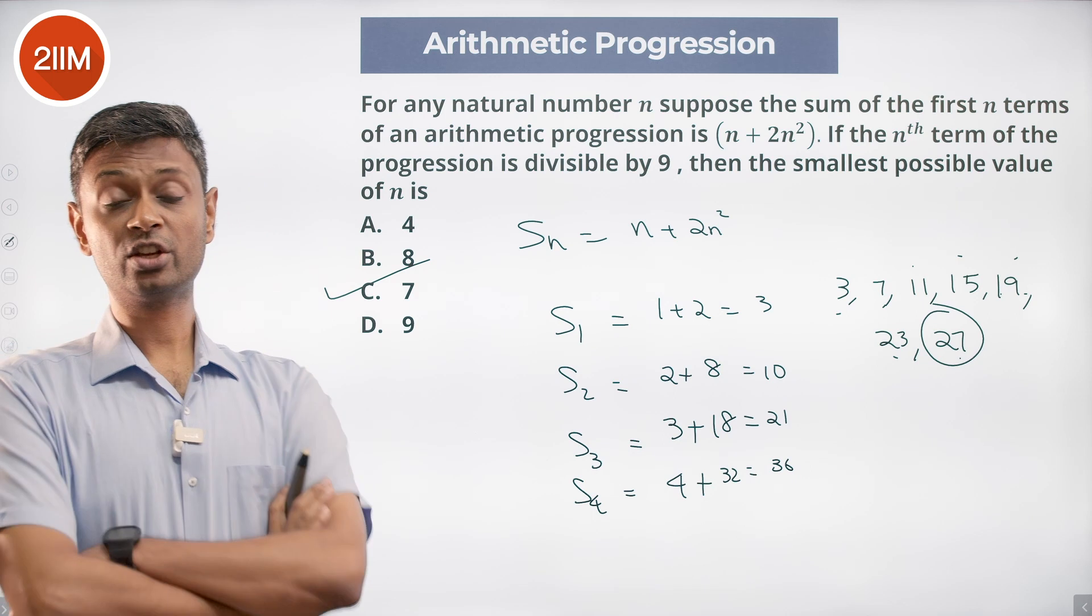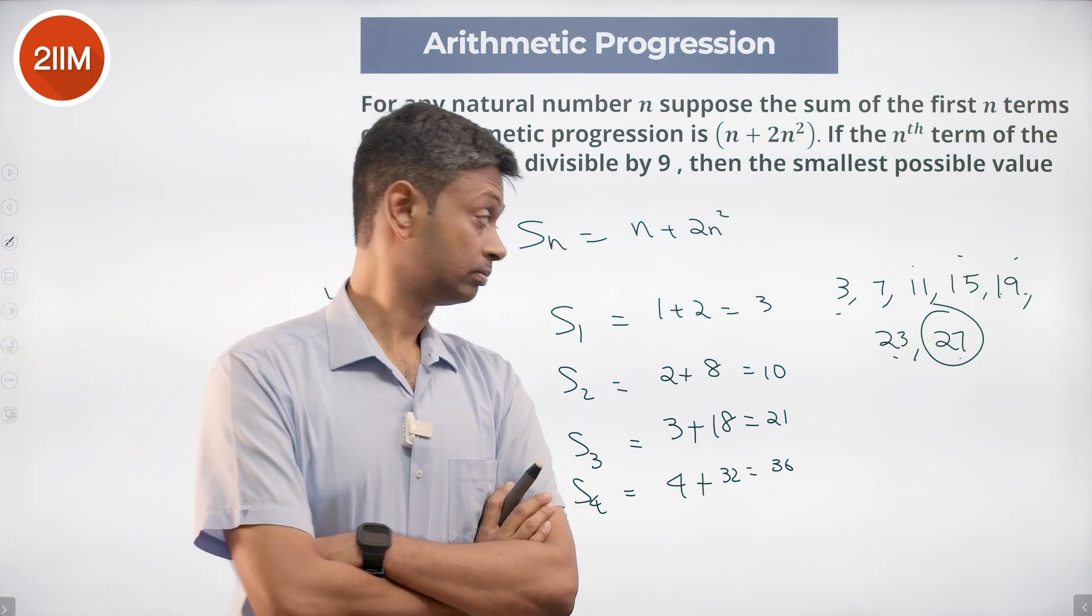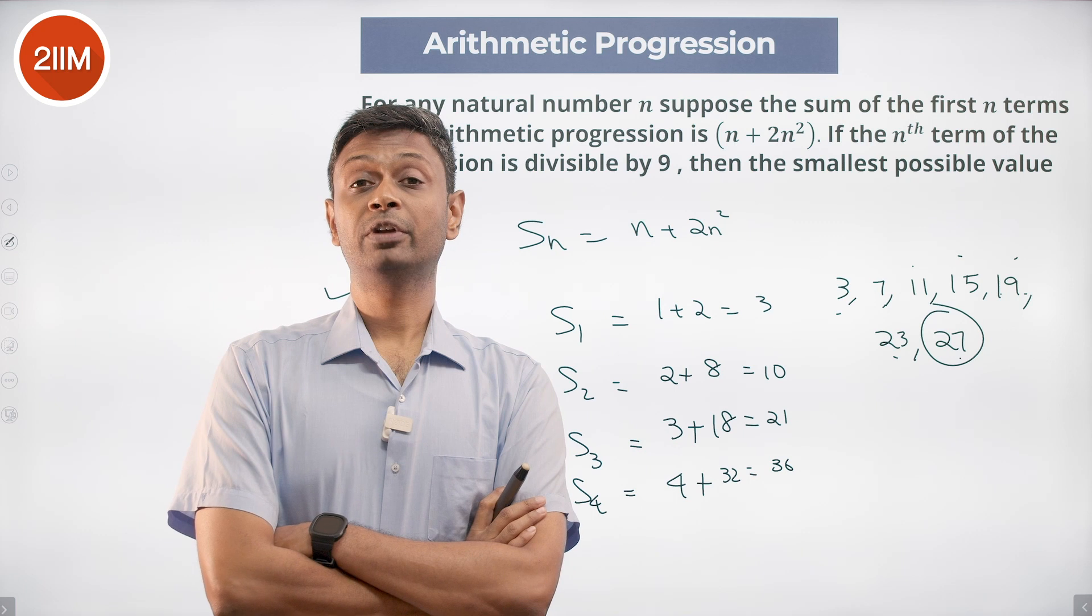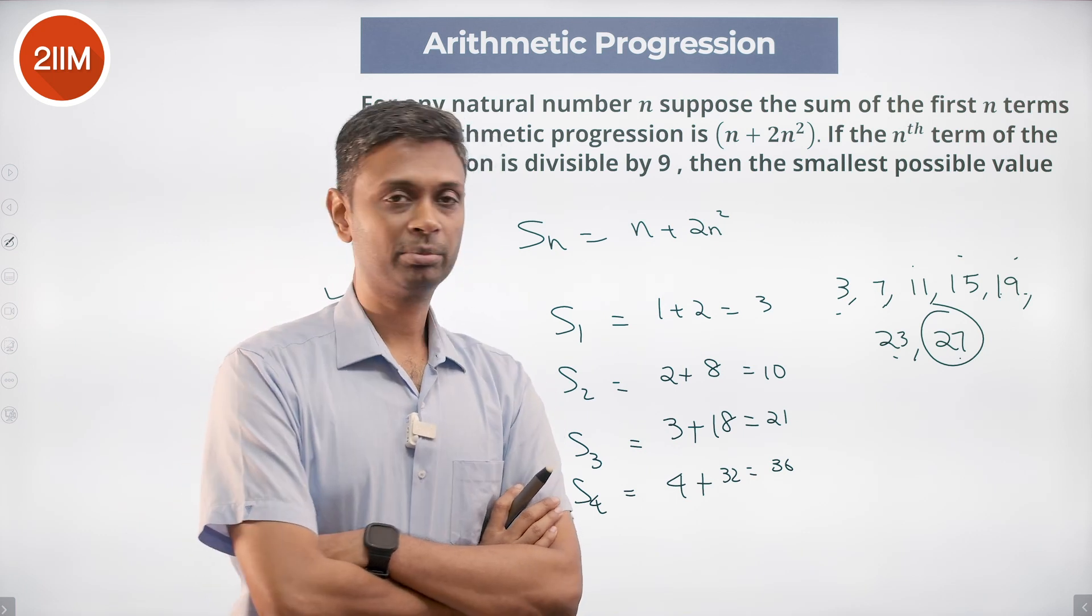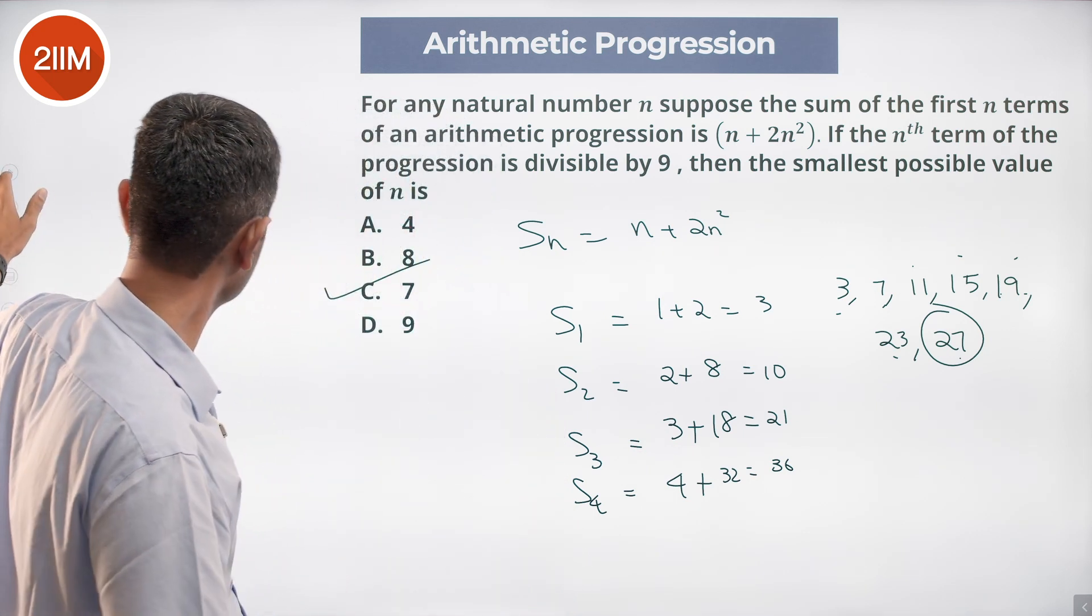Find S_1, S_2, S_3, S_4, and with that we have found term 1, term 2, term 3, term 4. With that we know the AP. Now find which term is a multiple of 9. Nice question, simple question.